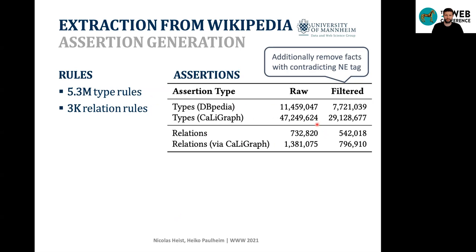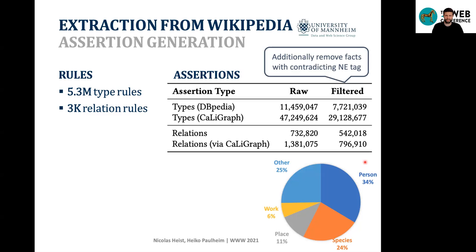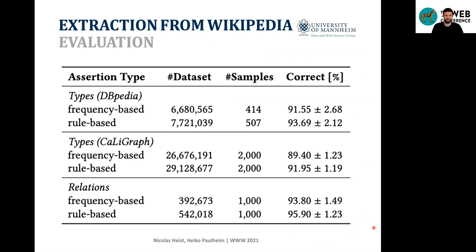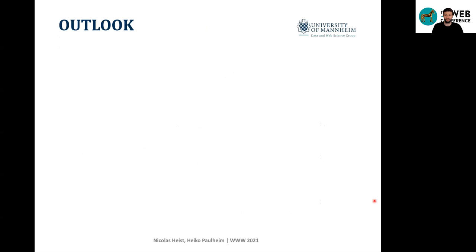We also apply filtering using the same tag-fit logic to remove invalid facts. Looking at the top-level distribution of derived types, we have a very diverse set of types that can be extracted. In evaluation, we sampled our derived facts and checked them for correctness, comparing the frequency-based approach with our rule-based approach. The rule-based approach derives more facts in all scenarios and achieves higher correctness in all three scenarios, showing that taking listing context into account works significantly better.